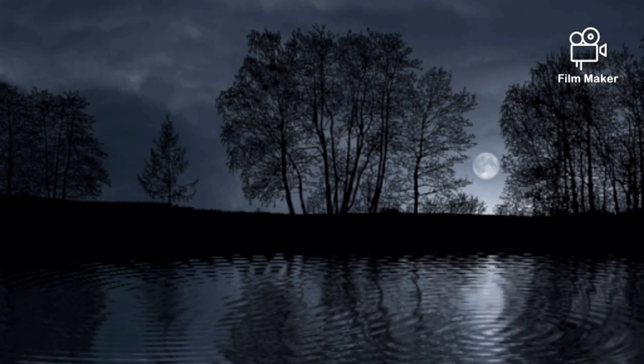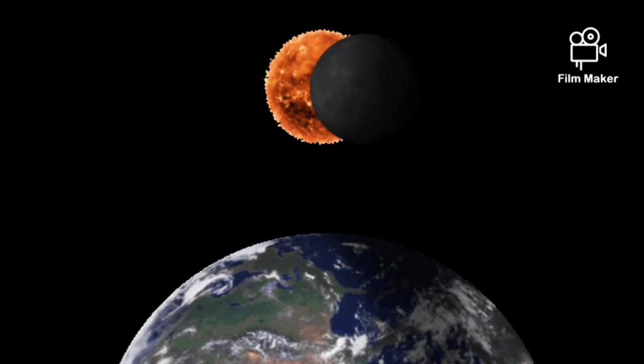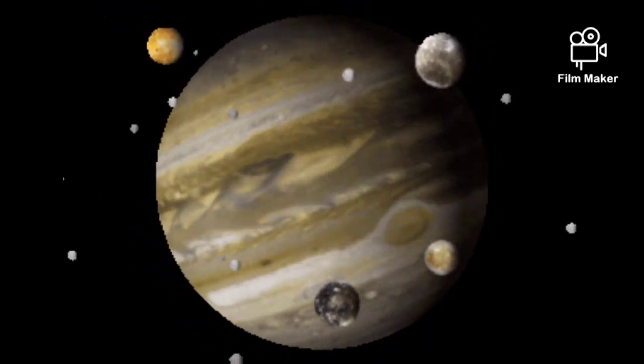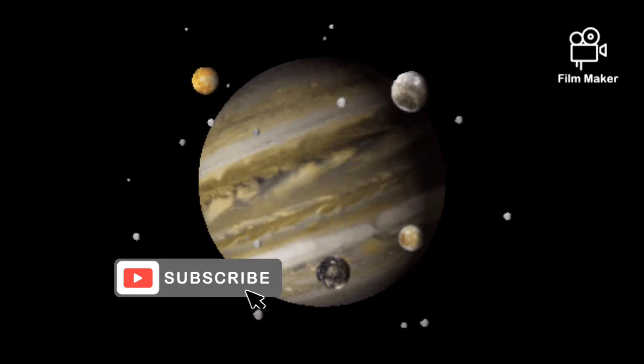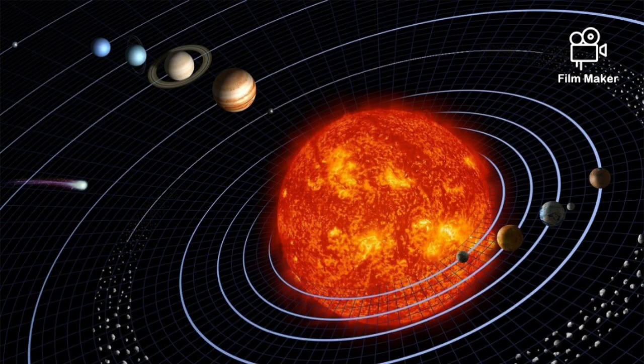We see moon at night. It revolves around the earth. Hence, it is called a satellite of the earth. Most of the planets in the solar system have satellites. The planets revolve around the sun along with their satellites.